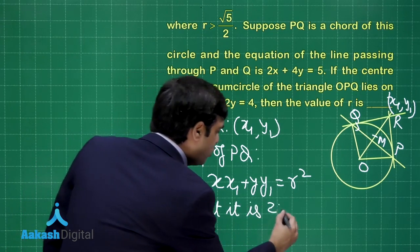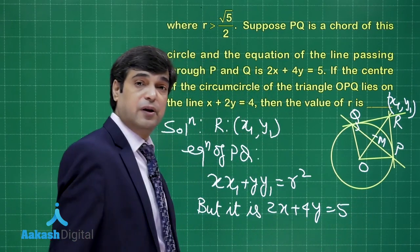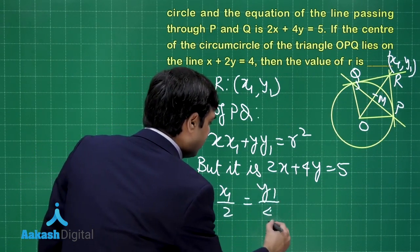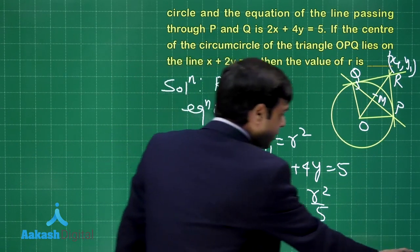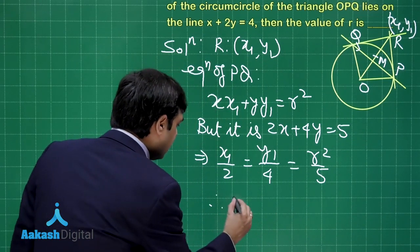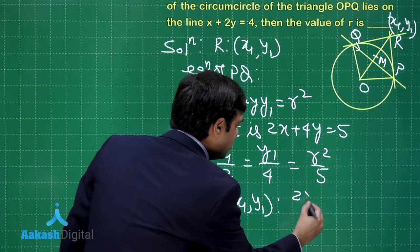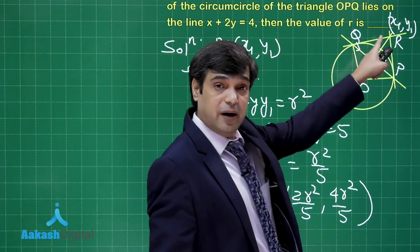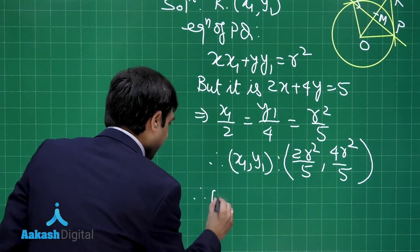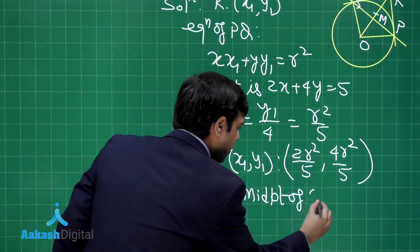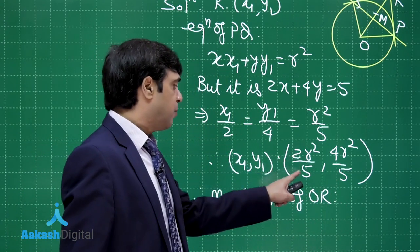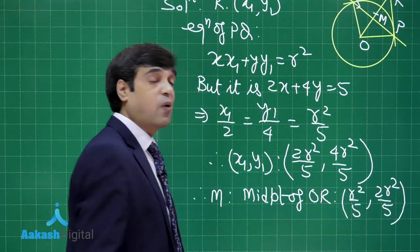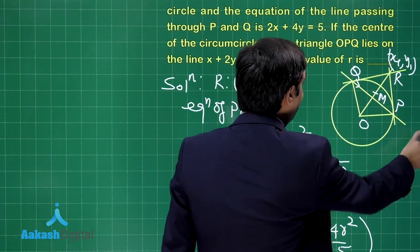Comparing x·x₁ + y·y₁ = r² with 2x + 4y = 5, we get x₁/2 = y₁/4 = r²/5. So point R = (x₁, y₁) = (2r²/5, 4r²/5). The midpoint M of OR is therefore (r²/5, 2r²/5), which is the circumcenter of triangle OPQ.